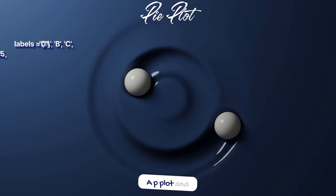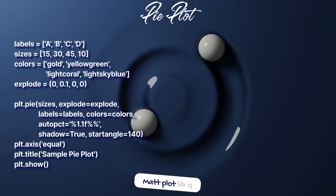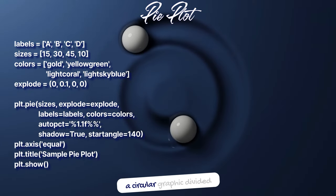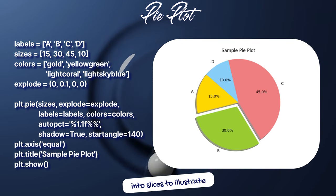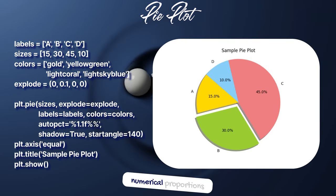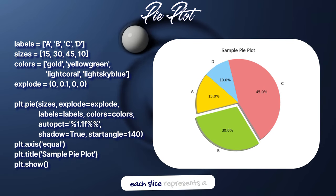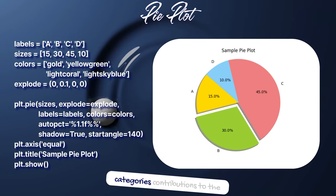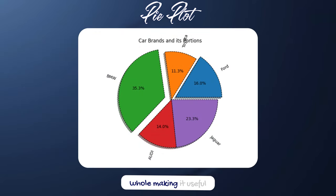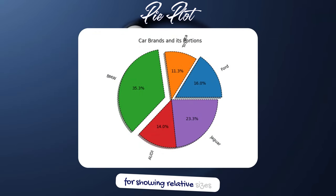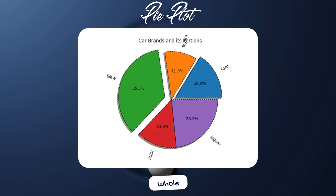A pie plot in Matplotlib is a circular graphic divided into slices to illustrate numerical proportions. Each slice represents a category's contribution to the whole, making it useful for showing relative sizes of parts to a whole.